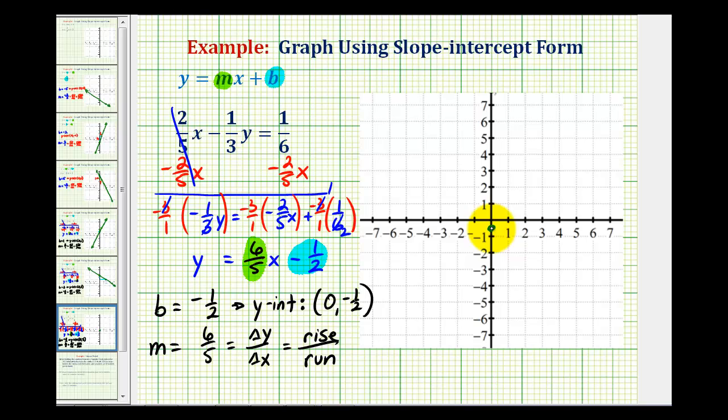So we'll go up six units, one, two, three, four, five, six, and then right five units, one, two, three, four, five. So the graph of the linear equation passes through these two points, and looks something like this.